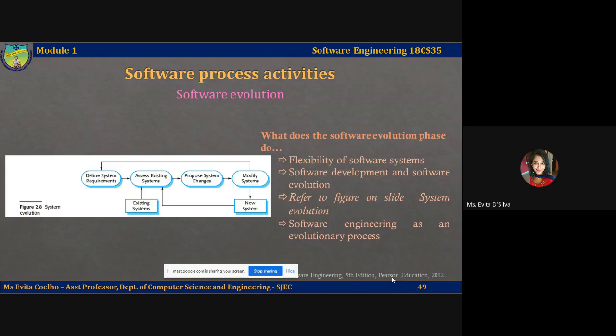Historically, there has always been a split between the process of software development and the process of software evolution or maintenance. People think of software development as a creative activity in which a software system is developed from the initial concept through to a working system. However, people also think software maintenance as dull and uninteresting, and maybe not the task of an engineer. Although the costs of maintenance are often several times higher than the initial development costs, maintenance processes are sometimes considered to be less challenging than the original software development.